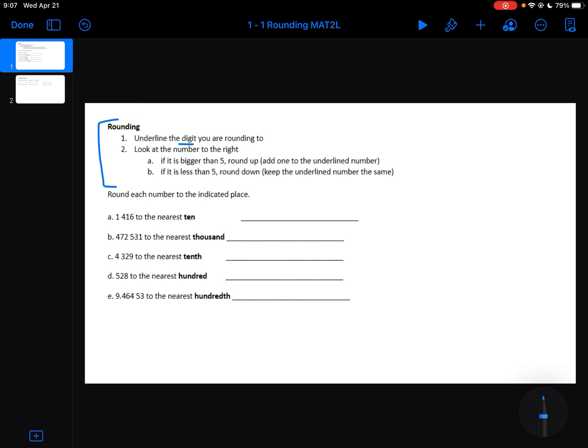Then you're going to look at the number to the right. If it's bigger than 5, you're going to round up. If it's less than 5, you're going to round down, which means that you keep the underlined digit the same.